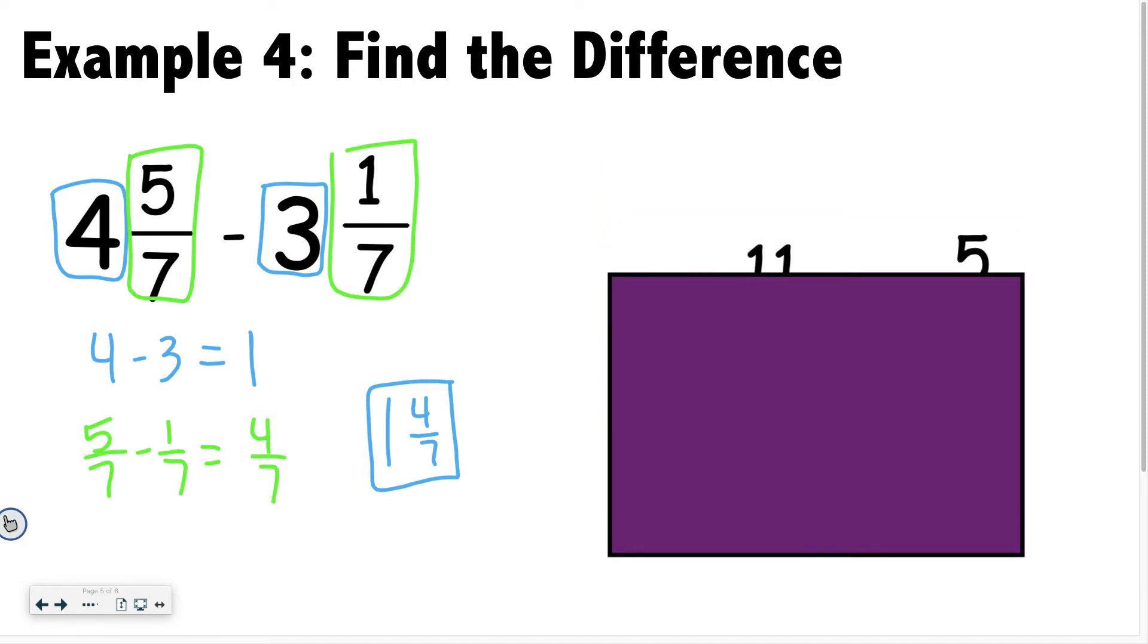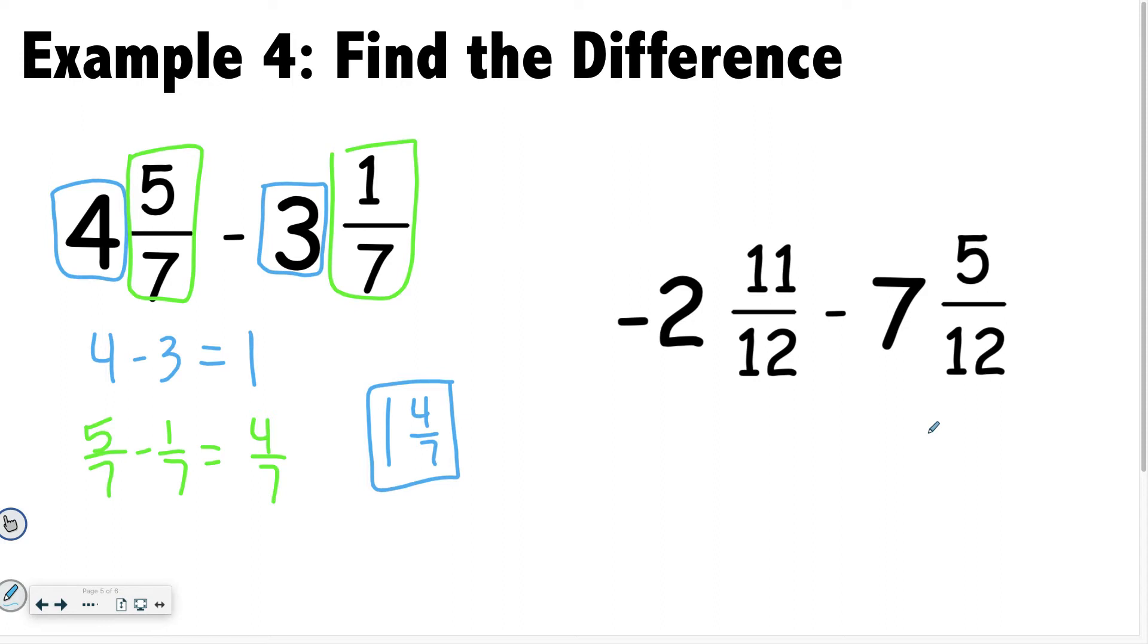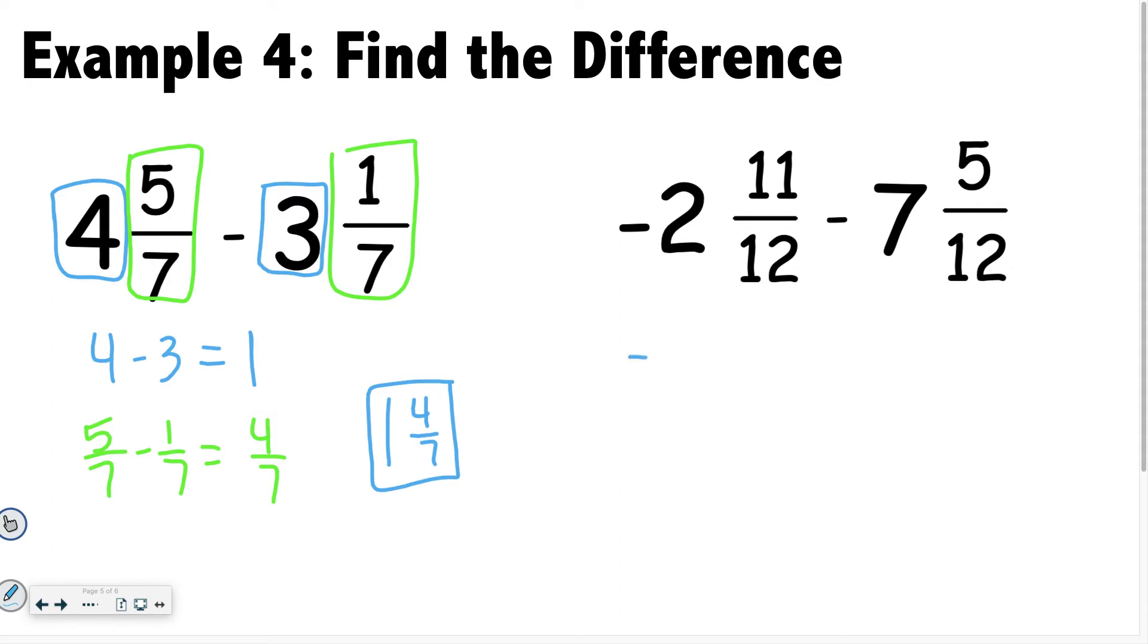However, if we move on to this problem, it's a little trickier. Because notice we have a number minus something bigger. So whenever that happens, you want to be extra careful. And so if I do negative 2 minus 7, I get negative 9. And then remember, I have negative 11 twelfths minus 5 twelfths. Negative 11 minus 5 is negative 16 twelfths. And if I simplify that, that would be negative 1, because 12 goes into 16 one time, with 4 left over. And then that 4 twelfths would become 1 third.